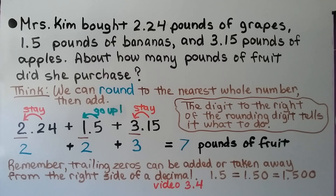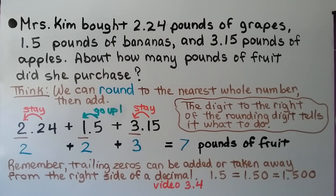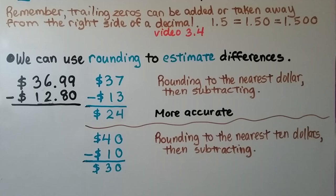The digit to the right of the rounding digit tells it what to do. For cases like 1 and 5 tenths, remember trailing zeros can be added or taken away from the right side of a decimal. 1 and 5 tenths is equal to 1 and 50 hundredths — we learned this in video 3.4, linked in the description. Sometimes adding a trailing zero can make it easier to add decimals together.